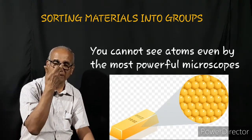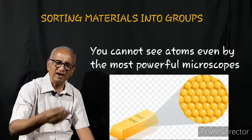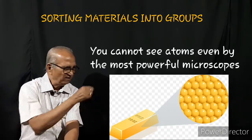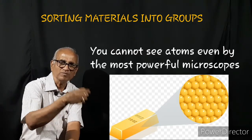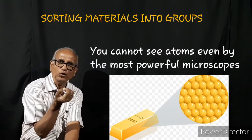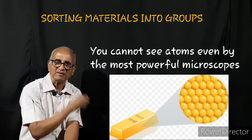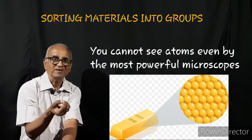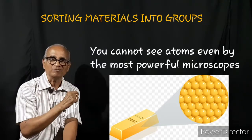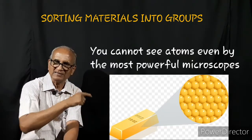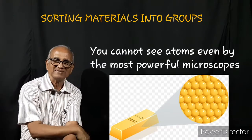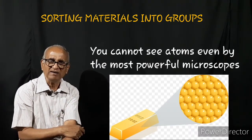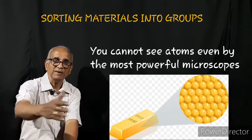Gold is an element. If you go on dividing gold into smaller and smaller pieces, ultimately you get the smallest particles. If you collect these particles and place 40 lakh of them one by the side of the other in a straight line, the thickness will be just one millimeter — one tenth of a centimeter. You can visualize now how small the atoms are. All objects in the world can be broken to such an extent that ultimately you get atoms.